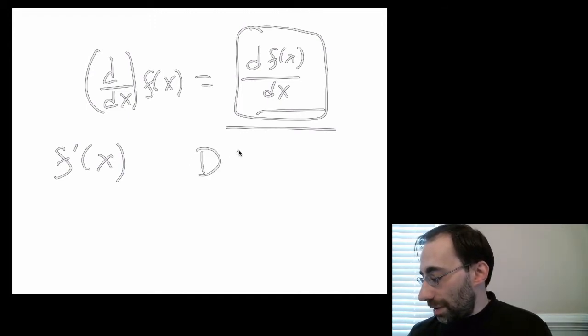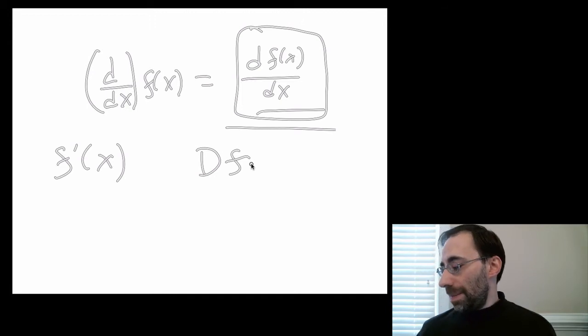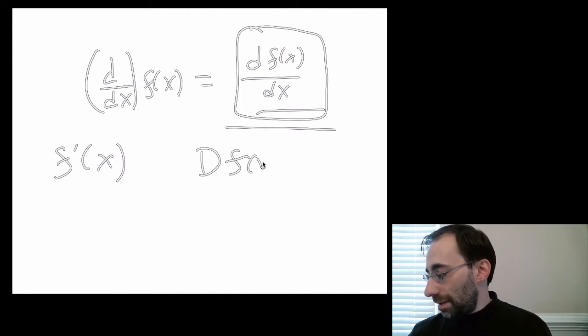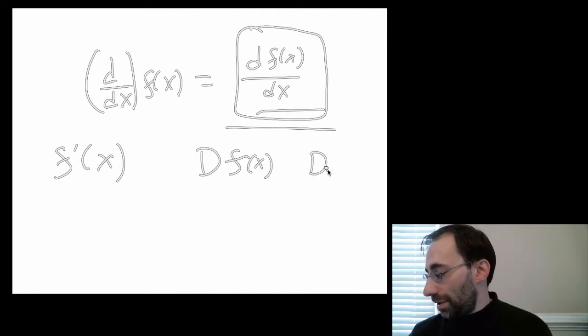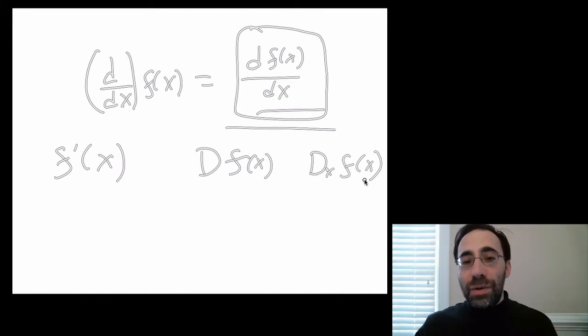Sometimes you might also see notation like this. This means the same thing as this. This means the derivative. If there's confusion, you can stick a little x there. The important thing to recognize is that these all mean the exact same thing. These are all ways of writing the derivative.